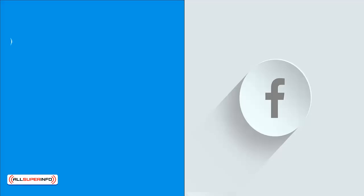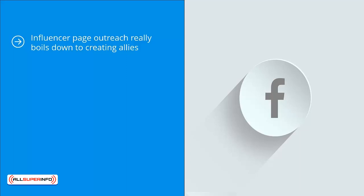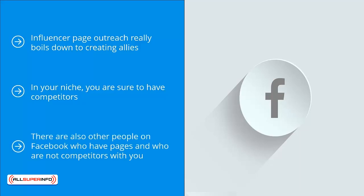Influencer page outreach really boils down to creating allies in your niche. You are sure to have competitors, however some of these competitors are open to cooperating with you. Many will not give you the time of day, but there are few who would see the strategic advantage of partnering up instead of competing. There are also other people on Facebook who have pages and who are not competitors with you — they may even have a lot of fans. Here's how you build alliances with influence leaders on Facebook.